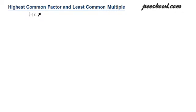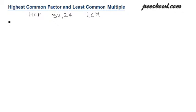Let us understand how to find the highest common factor (HCF) and least common multiple (LCM) of two numbers — for example, 32 and 24. In order to find the HCF and LCM, we need to find their prime factors first.